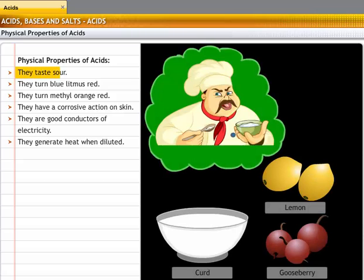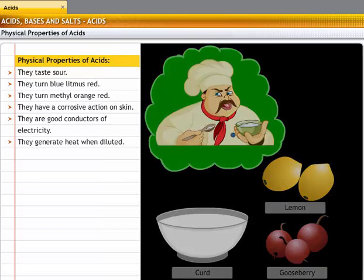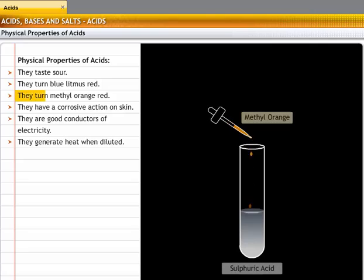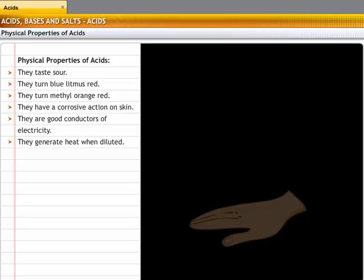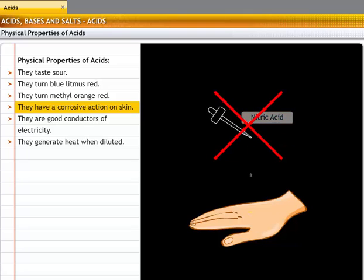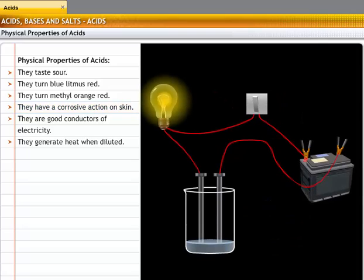We already know that acids taste sour. Acids also have other physical properties. Acids turn blue litmus red. They also turn methyl orange red. Acids have a corrosive action on the skin. Sulfuric acid stains the skin black. Nitric acid stains the skin yellow, and hydrochloric acid leaves an amber stain on the skin. Acids are good conductors of electricity.